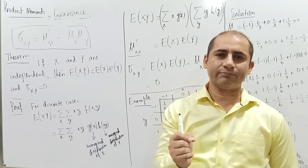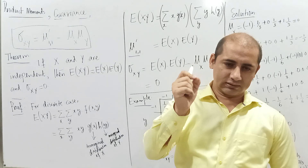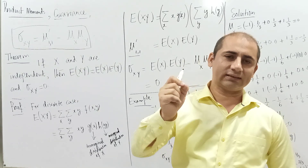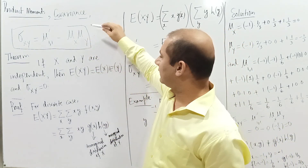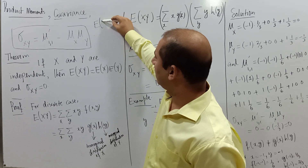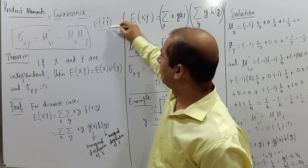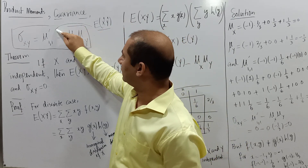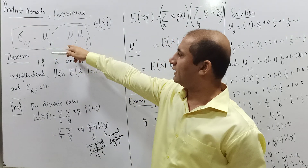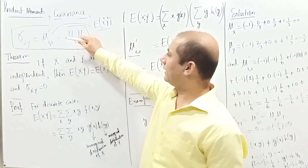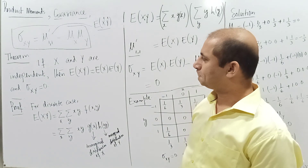When talking about product moments, we discussed moments about the origin and about the mean. We use r-th power with respect to the first variable X and s-th power with respect to the second variable Y. The expectation E[XY] is mu_11_dash, and we proved that the covariance of X and Y equals mu_11_dash minus mu_X times mu_Y.